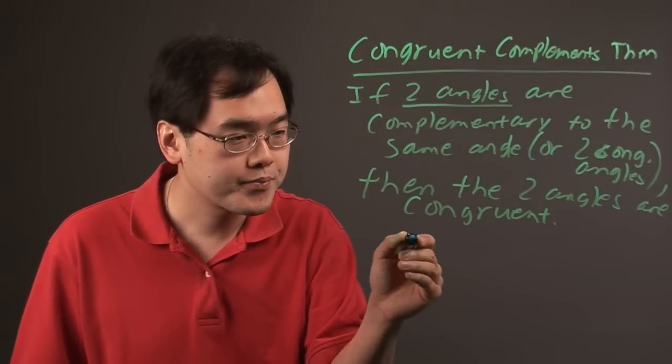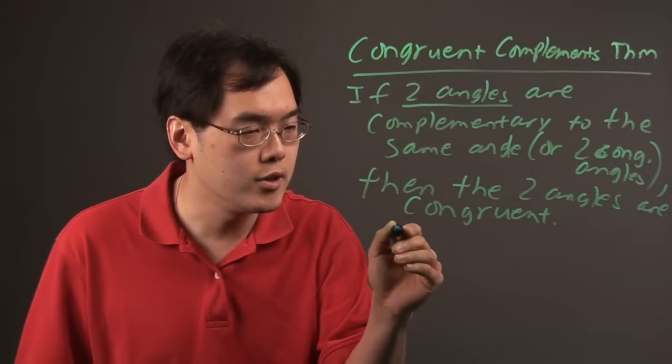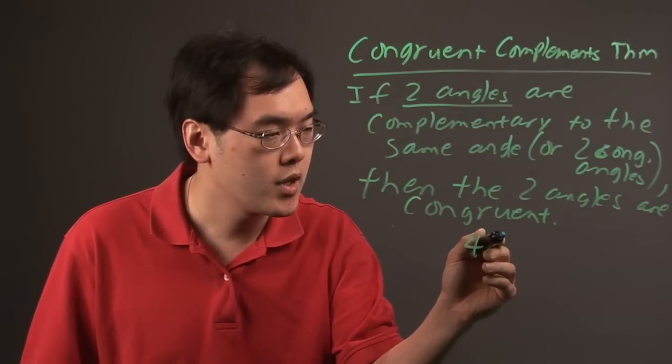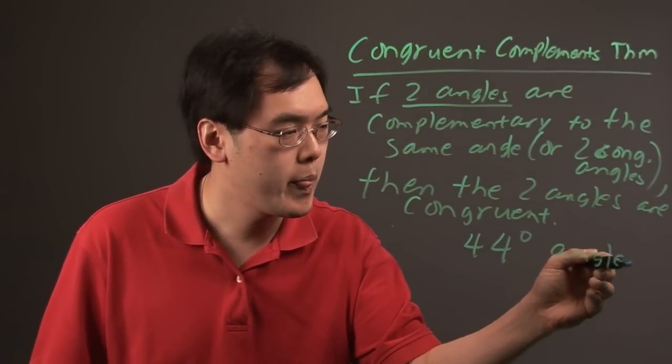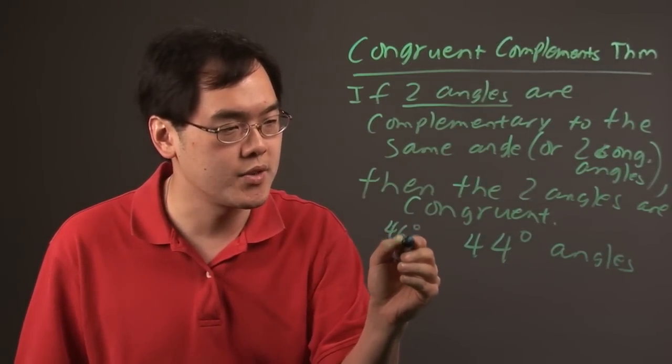So for example, if you have an angle that's complementary to a 44 degree angle, that means that first angle has to be 46 degrees.